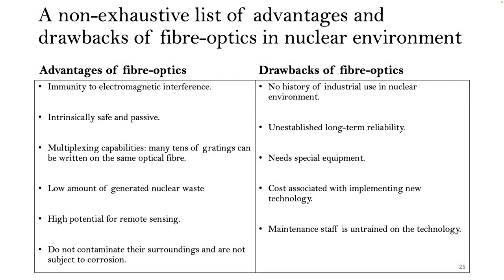What are the drawbacks of fiber optics? There is no history of industrial use in a nuclear environment — that's a challenge we are going to face. There is also unestablished long-term reliability, as it's a new technology that still has to be tested. It needs special equipment to work with, such as an optical time domain reflectometer and the SI-255 instrument. There is also the cost associated with implementing new technology, and maintenance staff is untrained on the use of this technology.